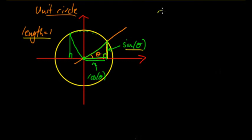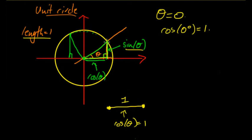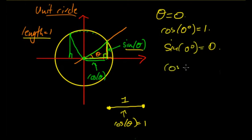This is quite useful for thinking about trig values. If theta equals 0, we have a straight line along the base, and we know cos 0° = 1. That makes sense because going from the origin to the outside of the circle along the base has length 1, so cos theta equals 1. There's no vertical component, so sine 0° = 0. Equivalently, cos 0 radians = 1 and sine 0 radians = 0.